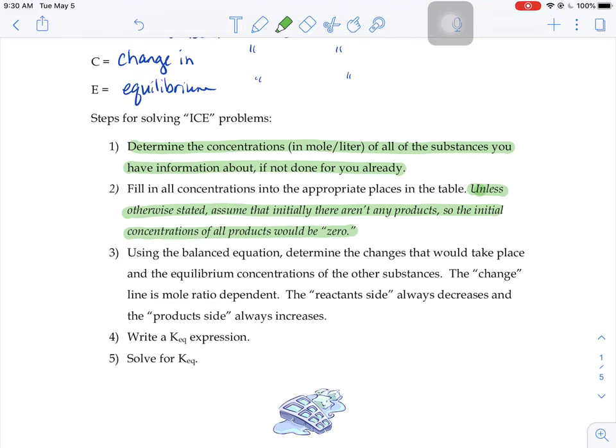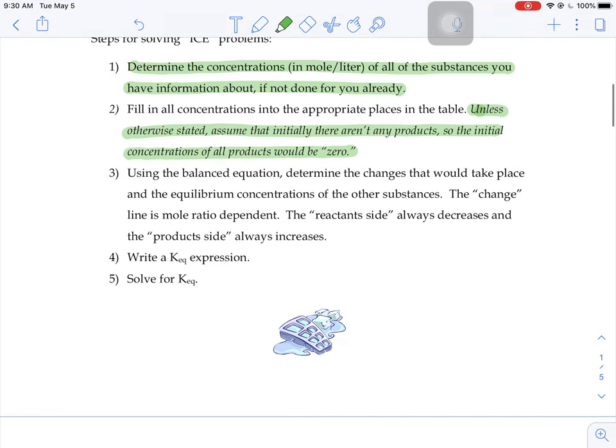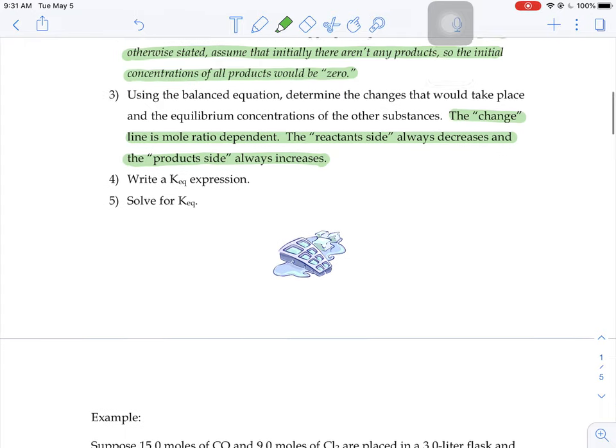You'll use your balanced equation to determine the changes that would take place. The change line is mole ratio dependent. I'll show you what that means in just a second. The reactant side is always going to decrease. The product side is always going to increase. You'd write a KEQ expression and solve for that KEQ. So let's try one.